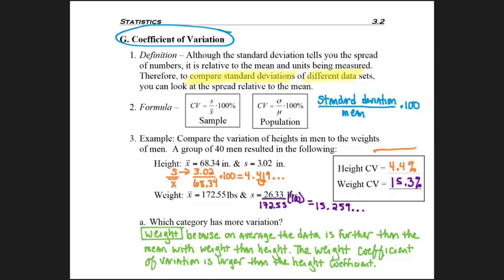Whichever number is larger means it's a further spread. So on average, men's weight are 15% away from their average weight, but on average, their height is only 4% of the height ranges away from the average.